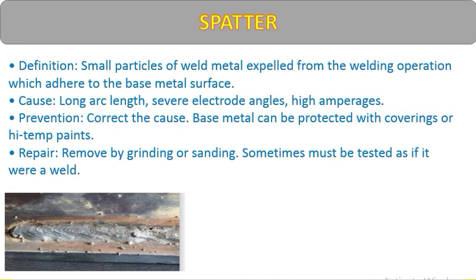Spatter — small particles of weld metal expelled from the welding operation. If current is too high or not at proper condition, spatter is generated. Causes: long arc length, incorrect electrode angles, and high amperage. Prevention: correct the cause; base metal can be protected with coverings or high-temperature paints. Before welding, remove any paint in the weld area, then do welding. Repair: prefer removal by grinding or sanding.